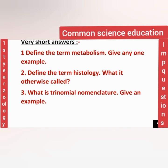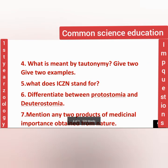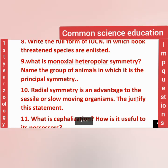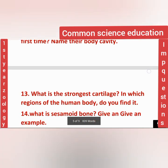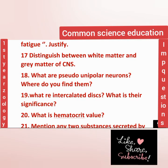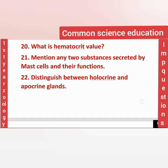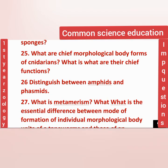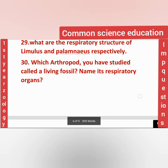Selected very short answer questions from Unit 1 include: define metabolism, define the term histology, trinomial nomenclature, tautonymy, ICZN, Protostomia vs Deuterostomia, two products of medicinal importance obtained from nature, IUCN, monaxial, heteropolar symmetry, radial symmetry, cephalization, name the animal that exhibits tube-within-a-tube organization, what is the strongest cartilage, sesamoid bone, intercalated disc, cardiac muscle is highly resistant to fatigue - justify, distinguish white matter and gray matter, what are pseudo-unipolar neurons, hematocrit value, two substances secreted by mast cells and their functions, holocrine, apocrine, retroperitoneal organs, functions of canal system in sponges.